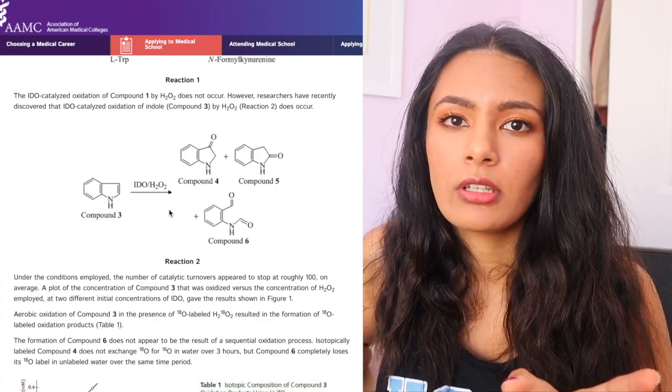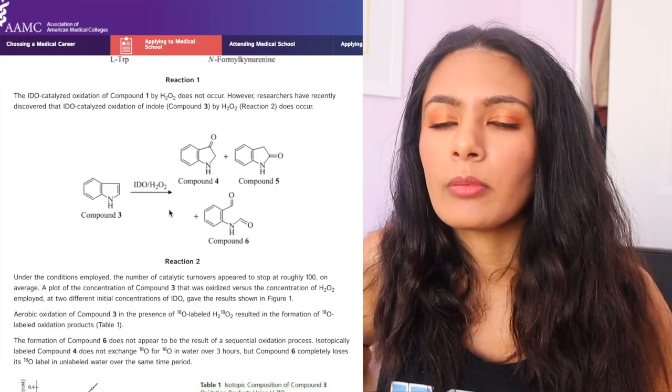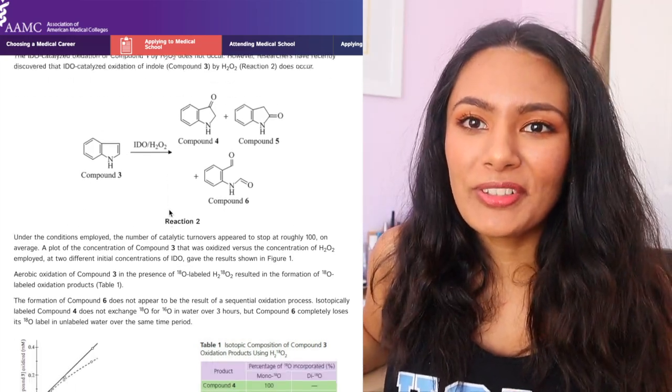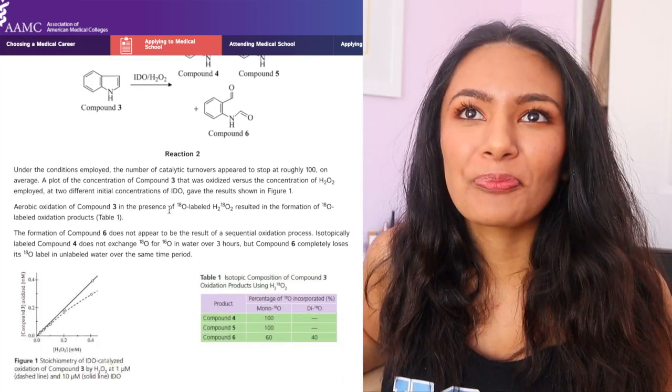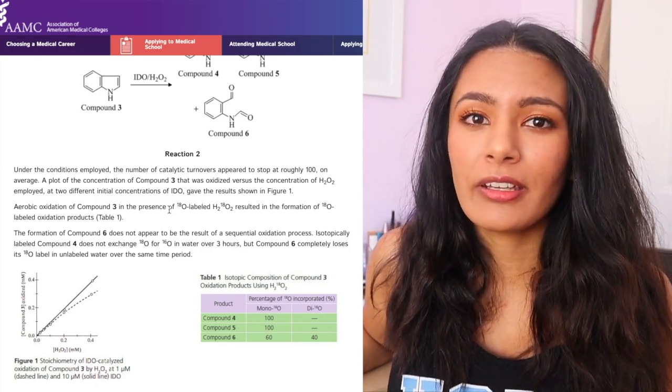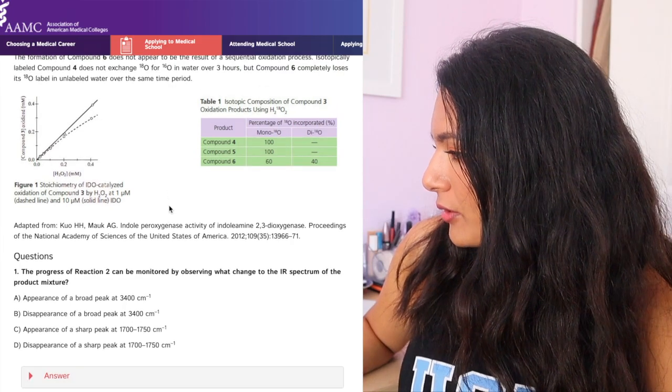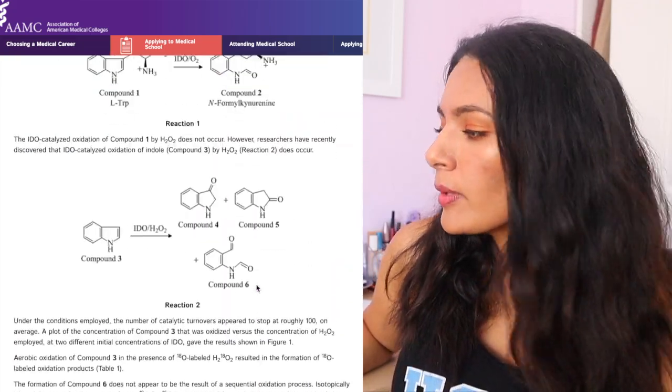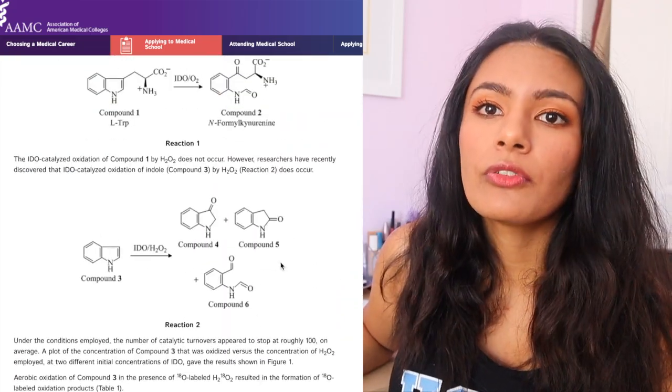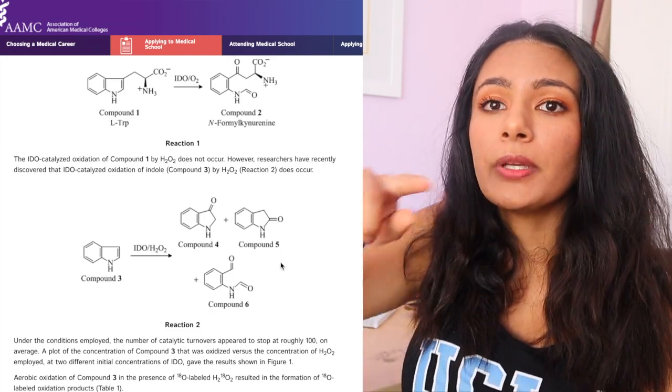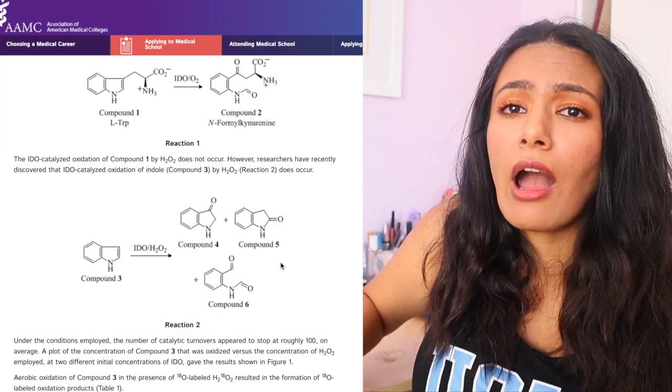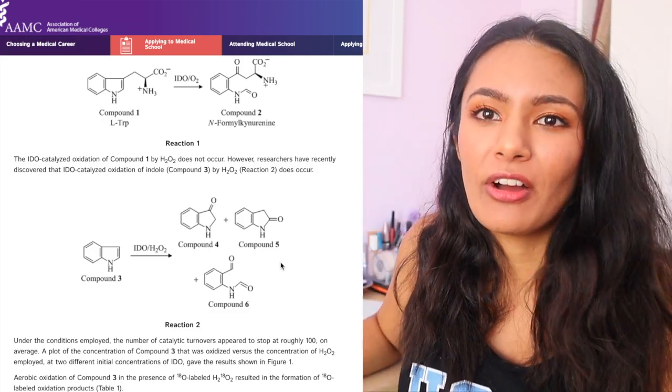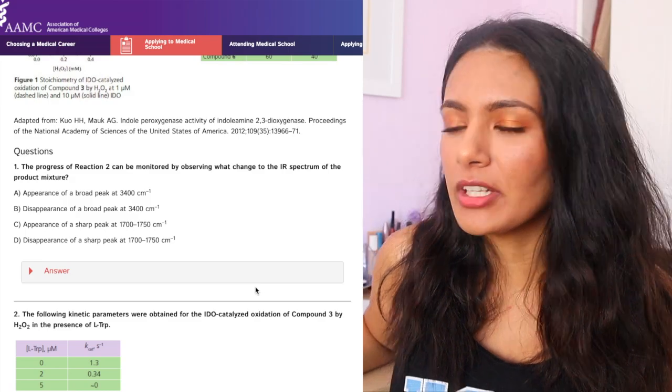And so hopefully by the time you've gotten to your practice examples, you will have memorized the IR spectra. I know that I made a graph of all of the different ones with the carbonyls and amines and double bonds and everything like that and kind of memorized the ranges where I would see those. But carbonyls are the ones that are the most kind of popular. They're the ones that are really obvious when you read any kind of IR spectra. And so I know that progress of reaction 2 can be monitored by observing what changed the IR spectra. If we have compound 3 turning into 3 different compounds that all have carbonyls, there should be an appearance of a really sharp peak around 1700.